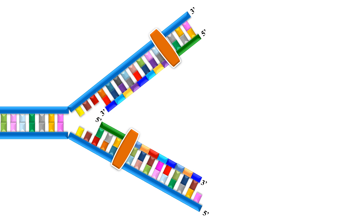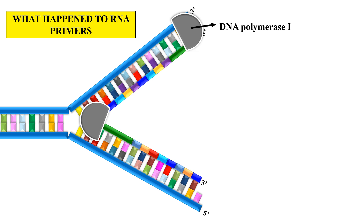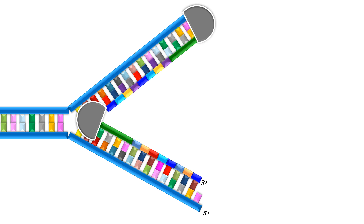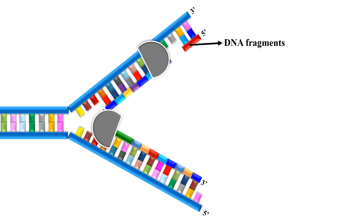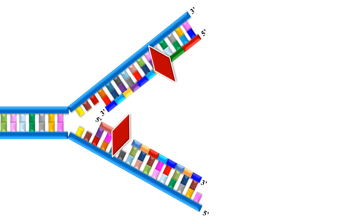Now we have two newly formed DNA molecules. What happened to the RNA primers? In the next step, the enzyme DNA polymerase I will replace these RNA primers with DNA fragments. The gaps will then be sealed by DNA ligase. By this process, the DNA gets replicated and from one single molecule, we get two new DNA molecules, and the process continues to produce many copies.